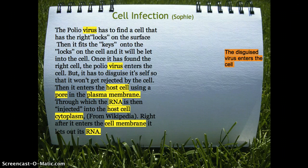Then it enters the host cell using a port in the plasma membrane, through which the RNA is then injected into the cell's cytoplasm — and that is from Wikipedia. Right after it enters the cytoplasm, it lets out its RNA.